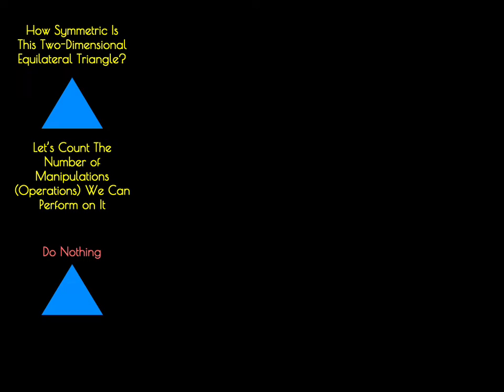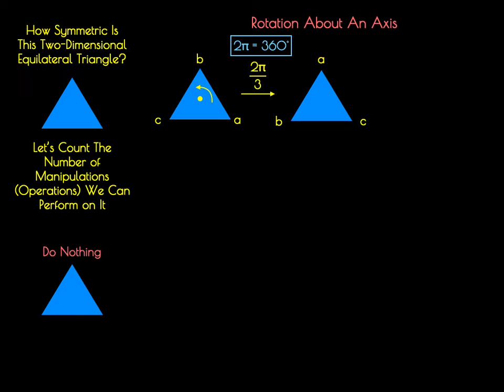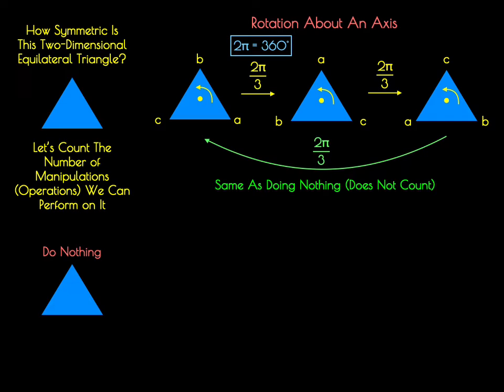In addition to that do nothing operation, we can also think about rotating this triangle about an axis that corresponds to the centroid of the triangle. To see what happens as we rotate this object, I'm going to label the vertices A, B, and C. And what we're going to do is a 2π over 3 rotation. So just remember that 2π radians is equal to 360 degrees. When you do that 2π over 3 counterclockwise rotation, A goes to B, B goes to C, and C goes to A. We can do a further 2π over 3 rotation, converting C to A, A to B, and B to C. Doing a third 2π over 3 rotation brings us back to where we started. Now, this third 2π over 3 rotation is the same exact thing as that do nothing operation. So this doesn't count. That do nothing operation will take precedent over that third 2π over 3 rotation.